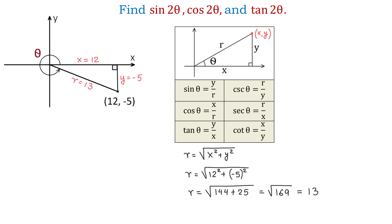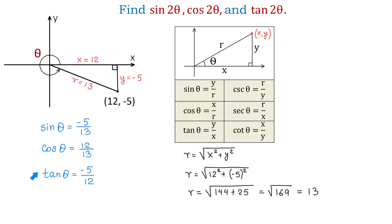Now, according to the formulas, we can write that sine of angle theta equals y over r, or negative 5 over 13. Cosine is x over r, so cosine of angle theta is 12 over 13. And tangent of angle theta is y over x, and that will be negative 5 over 12. So these are the values of sine, cosine, and tangent of angle theta.